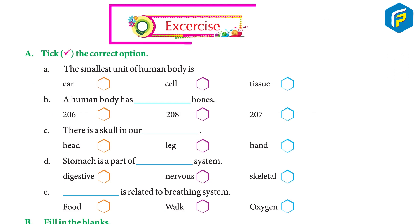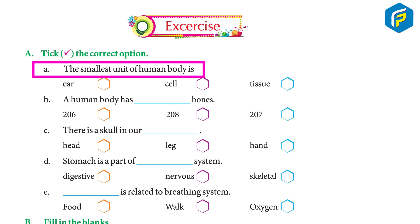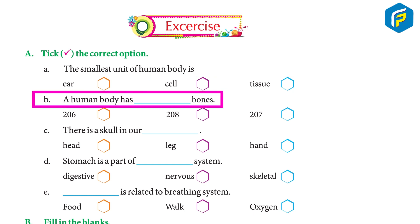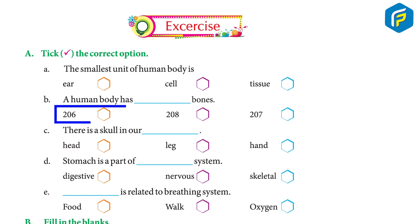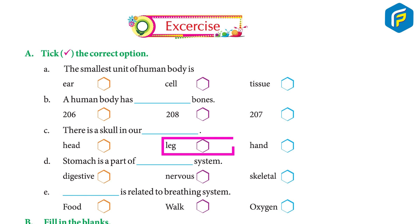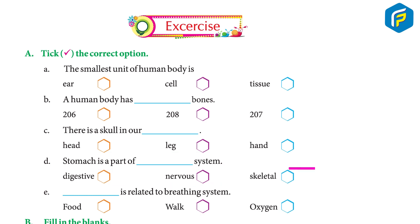Exercise A — Choose the correct option: (a) The smallest unit of the human body is a cell. (b) A human body has 206 bones. (c) There is a skull in our head.